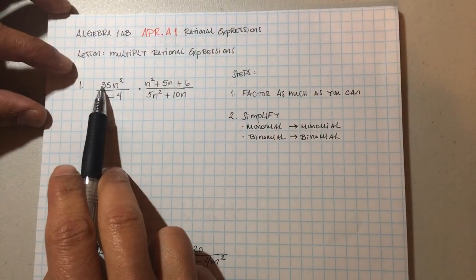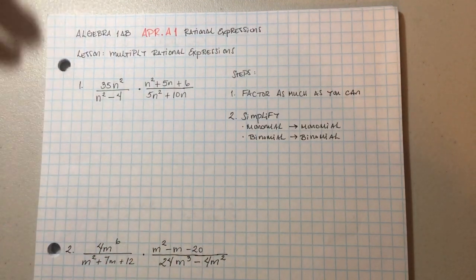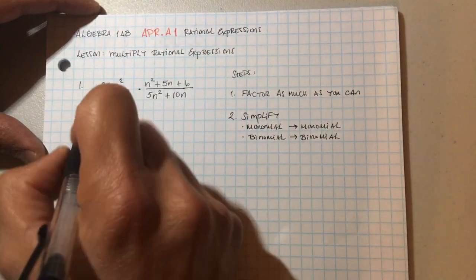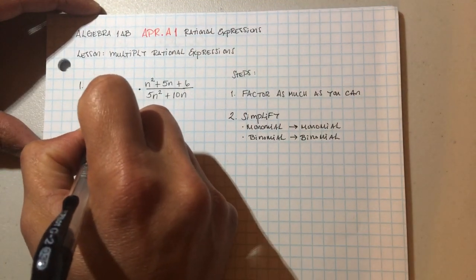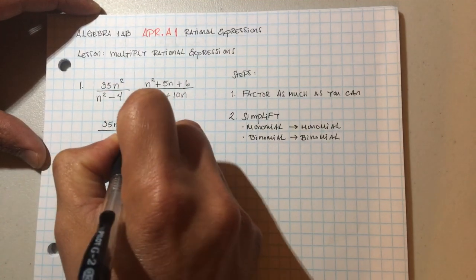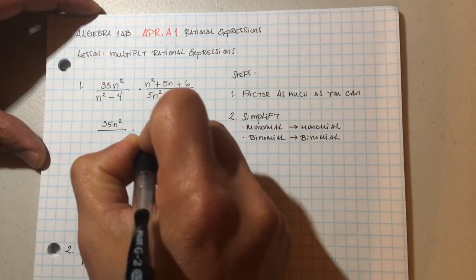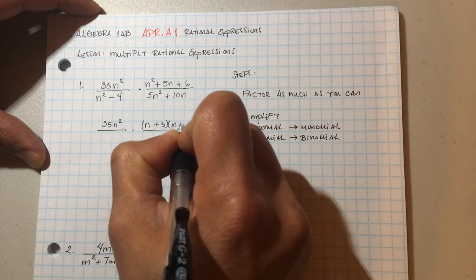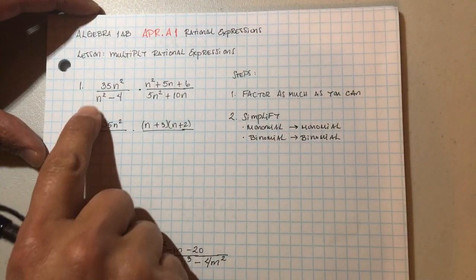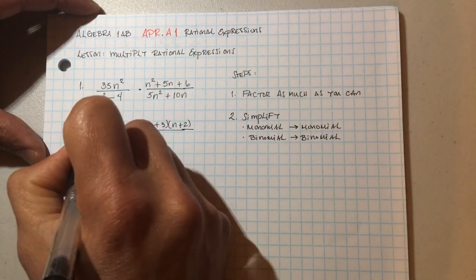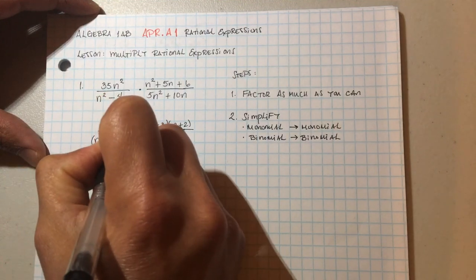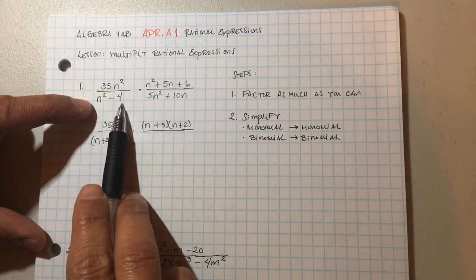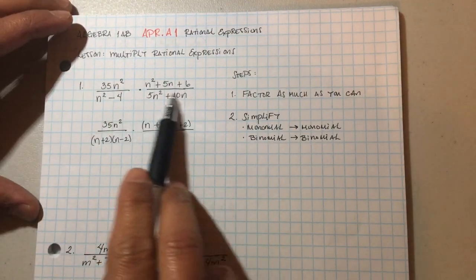So let's go ahead and start factoring. This first monomial is already simplified. I'm going to factor everything else. This expression here factors into n plus three and n plus two. And n squared minus four — that's a difference of perfect squares — factors into n plus two and n minus two.